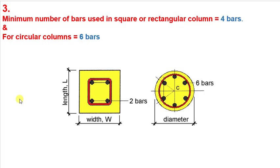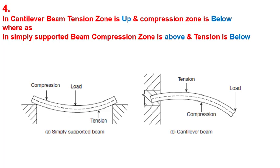The next and last point for today's video is very important — it is a repeatedly asked question in exams and interviews. We have various types of beams, but particularly two important types: simply supported beam and cantilever beam. A cantilever beam has support on one side, while a simply supported beam has supports on both sides.